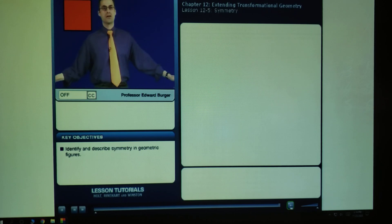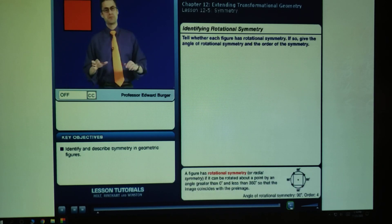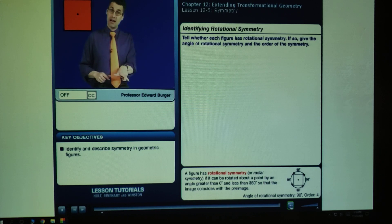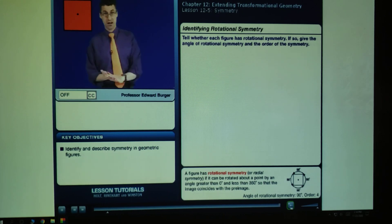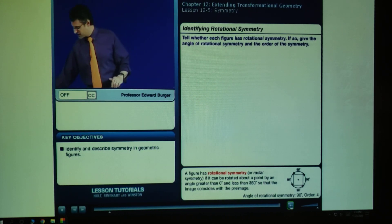Another type of symmetry is called rotational symmetry, where there's a fixed point, and when you rotate by a certain angle about that fixed point, the image coincides with the original image. Let's take a look at some examples.